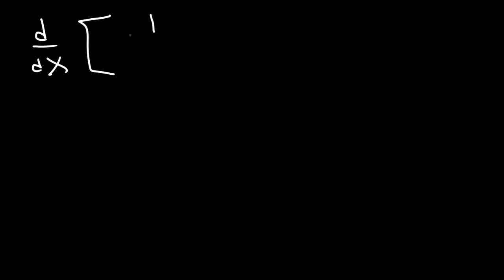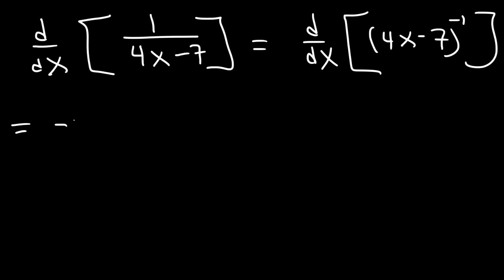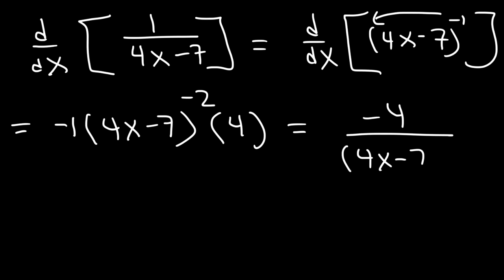Next, find the derivative of 1 over 4x minus 7. Following the same pattern, we're differentiating 4x minus 7 raised to the negative 1. Using the chain rule and power rule, move the exponent to the front, keep 4x minus 7 the same, subtract the exponent by 1 to get negative 2, then multiply by the derivative of the inside. The derivative of 4x minus 7 is 4, so the answer is negative 4 divided by 4x minus 7 squared.